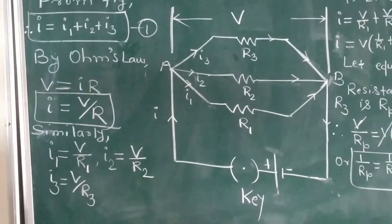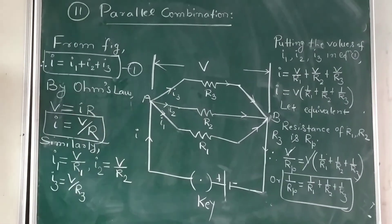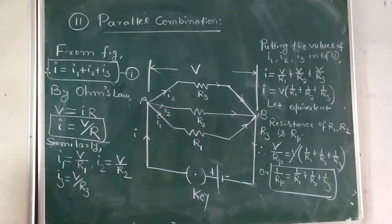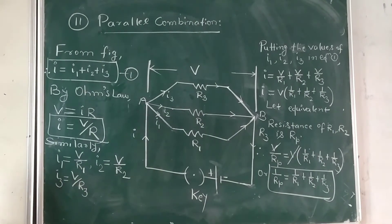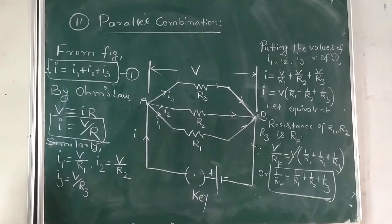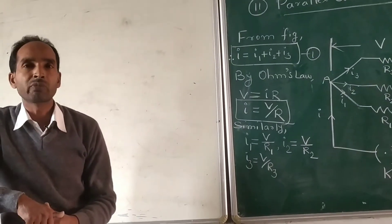So whenever we have to find the equivalent resistance which are connected in parallel combination and the minimum value of resistance is asked, then we will find the combination of resistances in parallel.